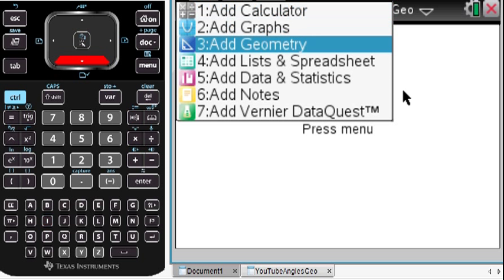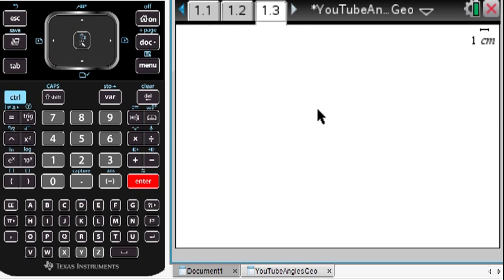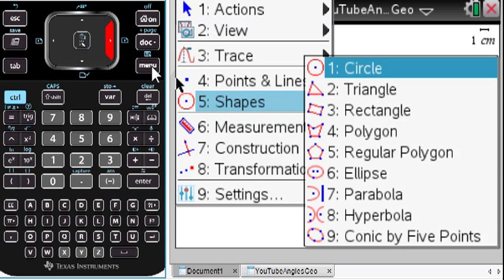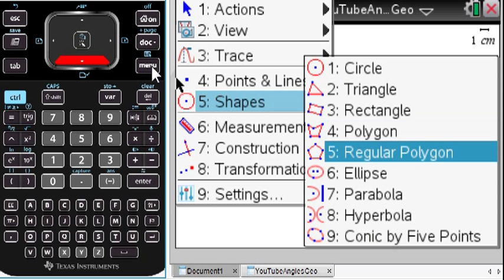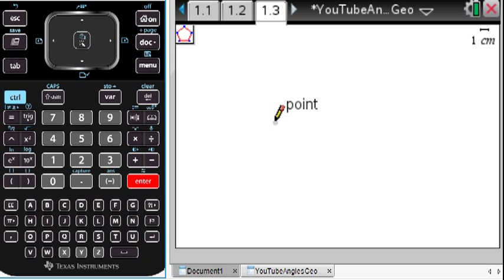First off, let's add a geometry page. Geometry pages by default are going to give you the angle in degrees. Let's take a look at making regular polygons.